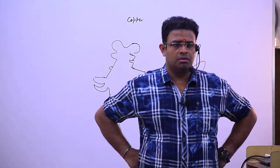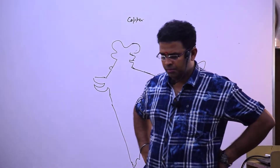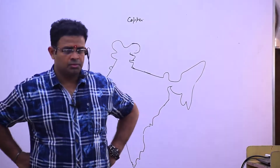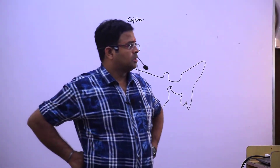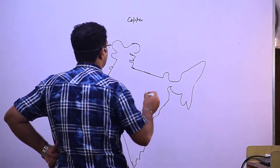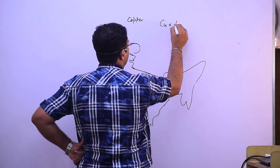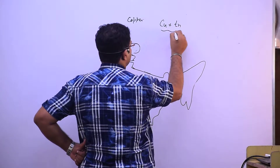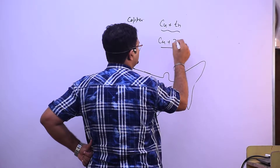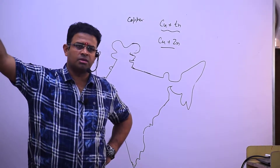Copper is used in the electrical industry. Copper and tin make bronze, and copper and zinc make brass. These are the alloys made from copper.